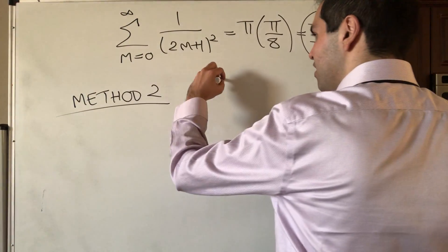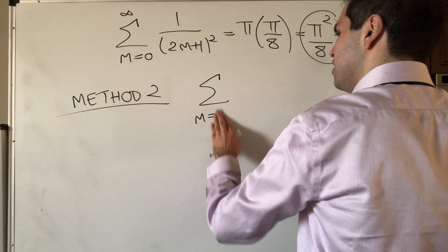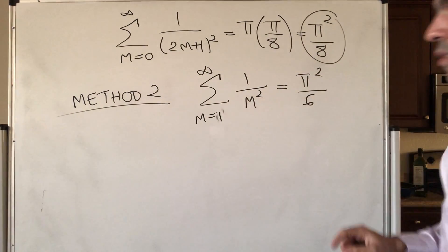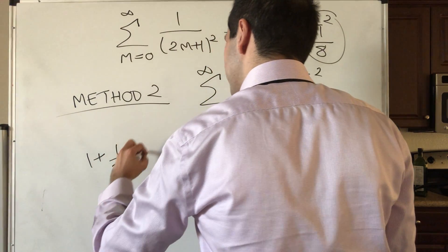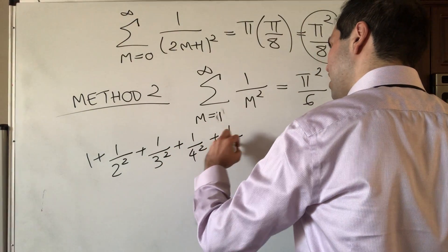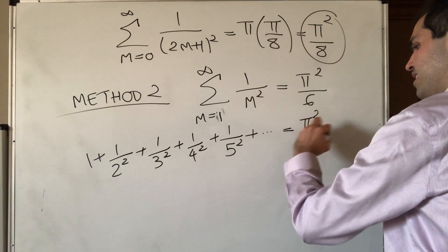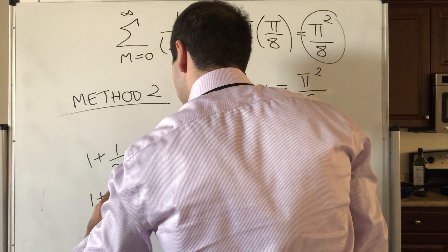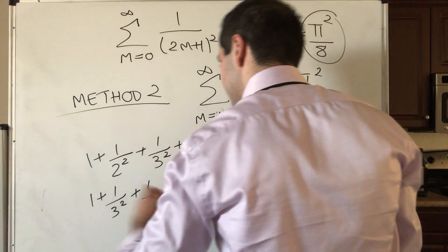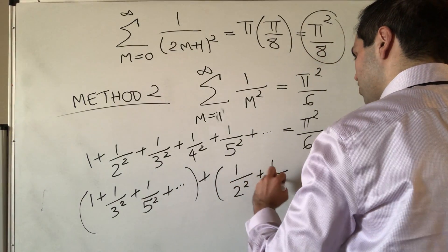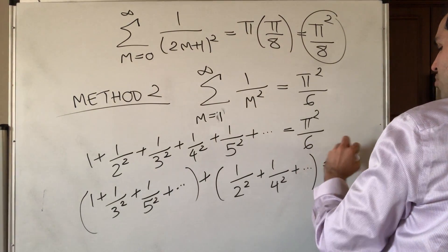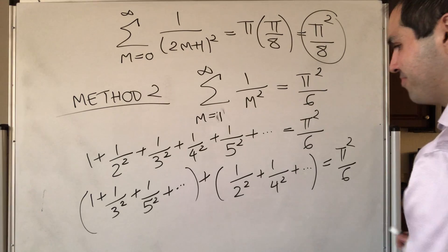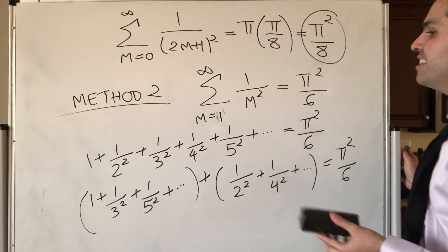Now for method 2. Start with Basel's formula, which says the sum from m = 1 to infinity of 1/m² = π²/6. That's 1 + 1/4 + 1/9 + 1/16 + 1/25 + ··· = π²/6. We can split this sum into even and odd terms: (1 + 1/3² + 1/5² + ···) + (1/2² + 1/4² + ···) = π²/6. We're allowed to rearrange because this series converges absolutely.